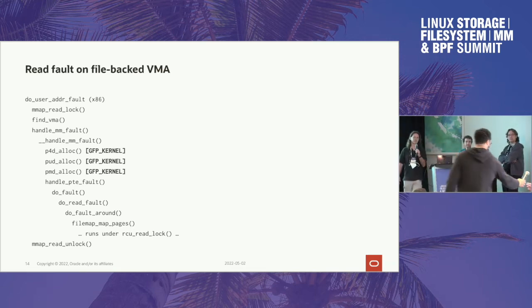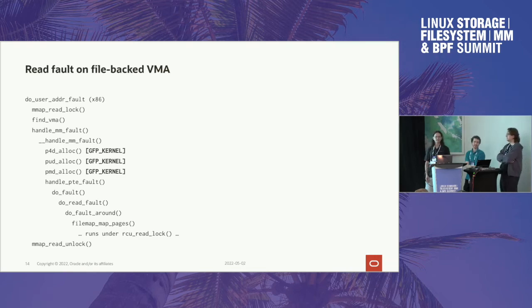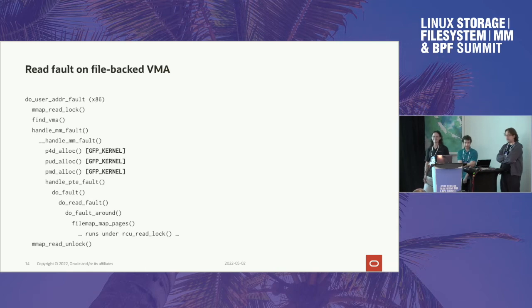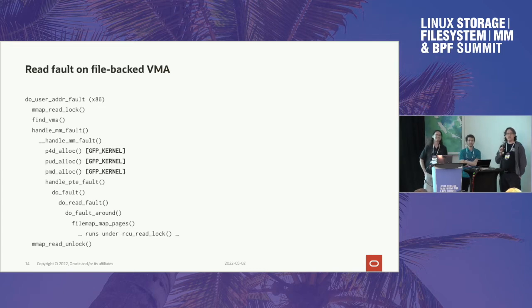Not only do we need page table freeing under RCU — we also have to make sure that any auxiliary data glued to the page table gets freed using RCU. For page tables that includes, for example, the page table lock itself. On some architectures it's embedded in struct page, on others not. We'll get more into that problem domain once we use dynamic allocation of struct page parts. We actually have that unresolved issue in the current SPF patch set — it's configuration-dependent: if you have split PTE locks you'll allocate them separately rather than having them in struct page.